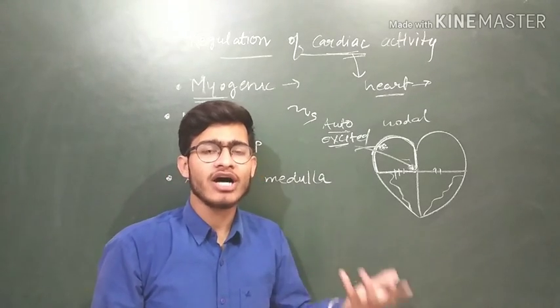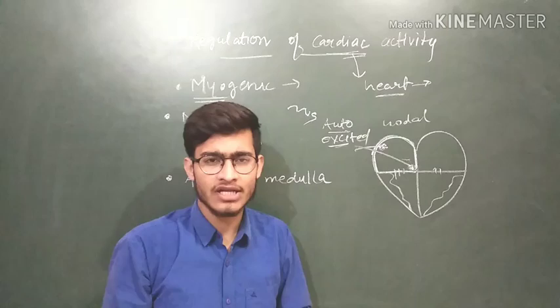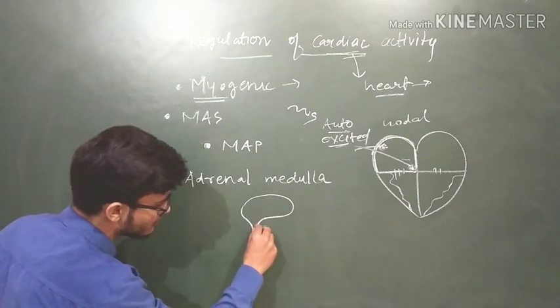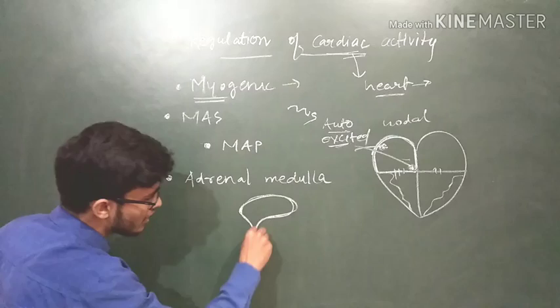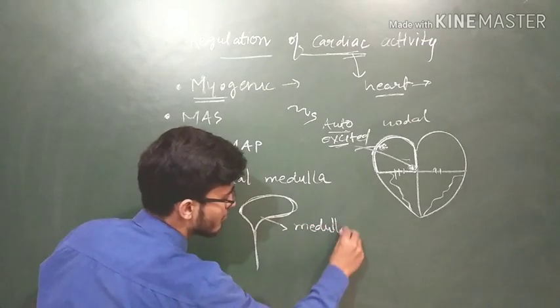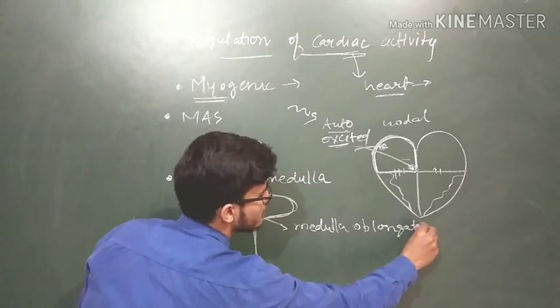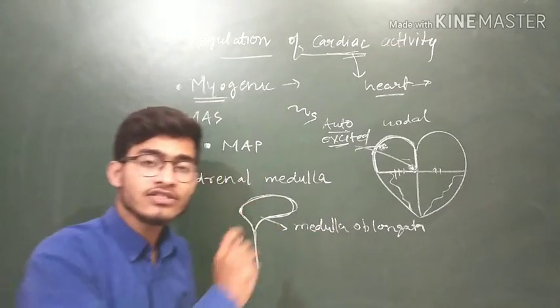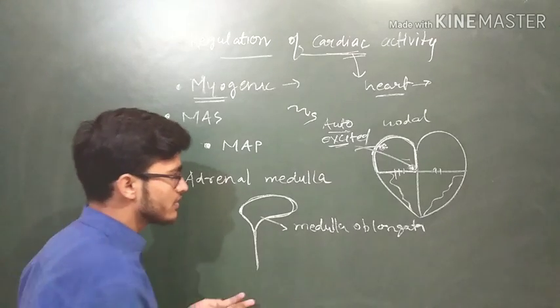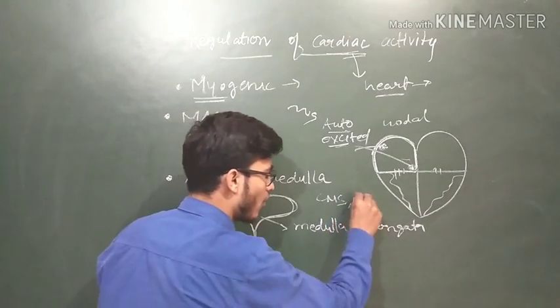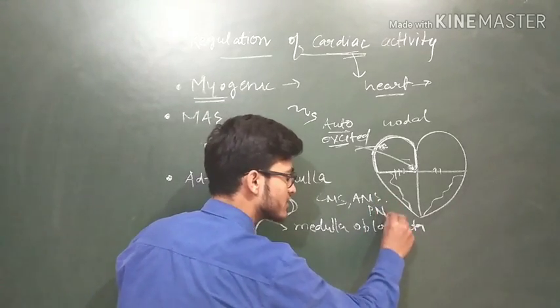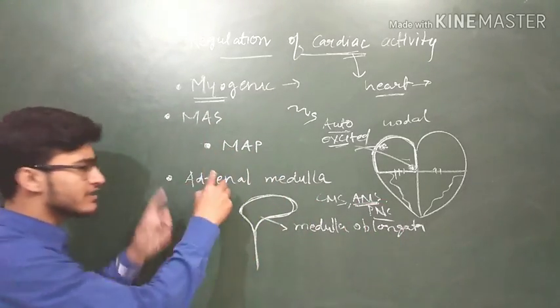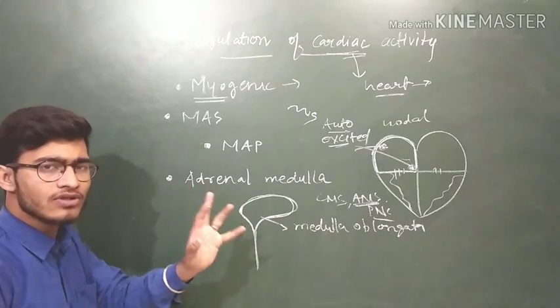Now, sometimes regulation is needed from outside as well. Some external things also influence our cardiac activity. That is affected or done with the help of a center. For example, let's say this is the brain. If you have a brain, then its medulla region, medulla oblongata, is going to regulate the function of heart. Now, there are different regions of brain and there are different types of neural system cells. There is central nervous system, autonomic nervous system, peripheral nervous system. So, among these nervous systems, ANS used to control the activity of heart.